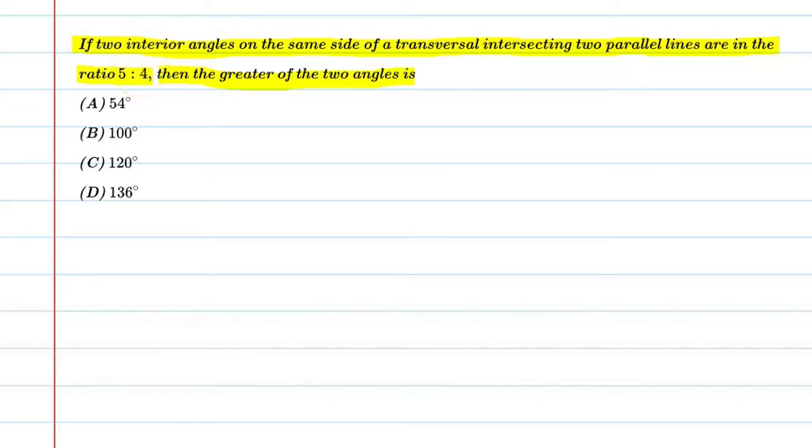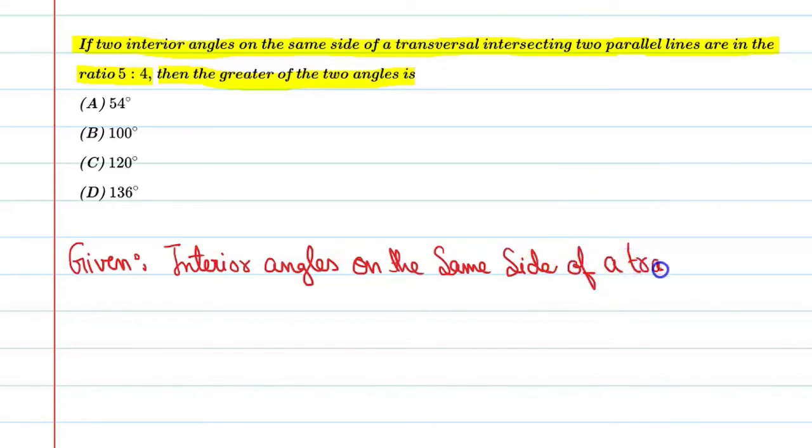Let's start this question. First, we will write the given condition and see this question through the figure also. Given: interior angles on the same side of a transversal are in ratio 5 to 4.